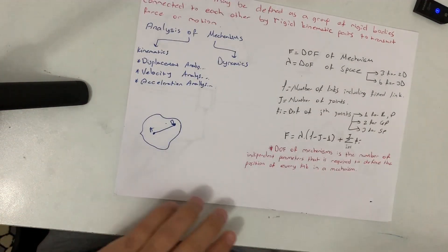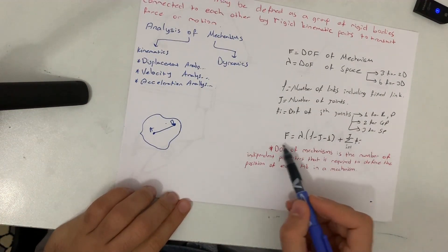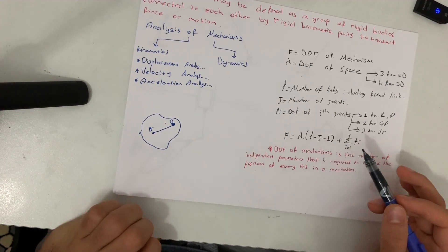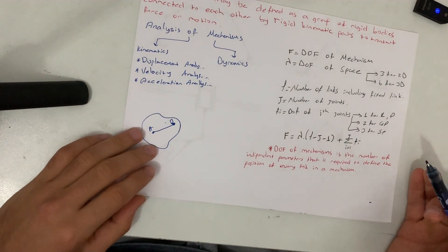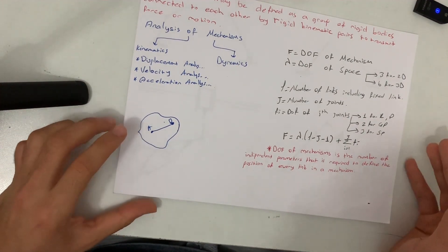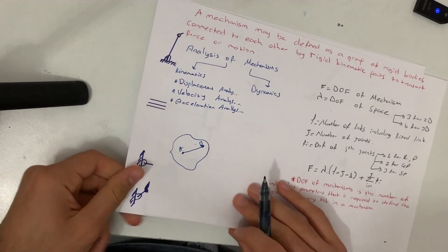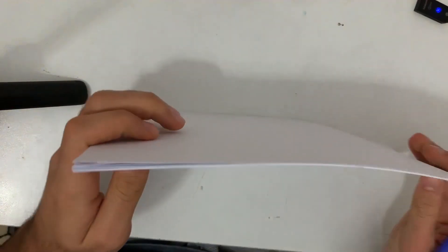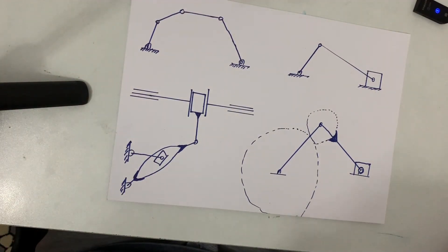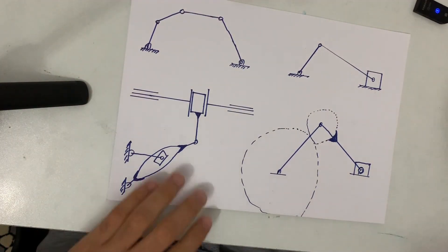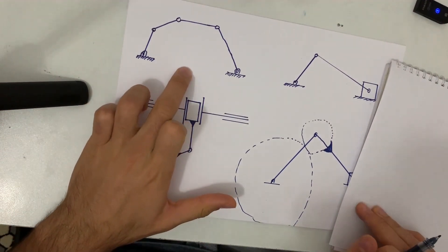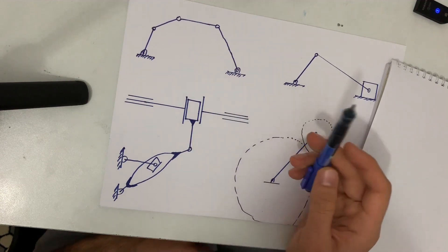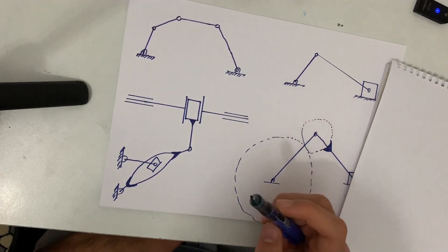So that is the formula. We will memorize it and I will write it repeatedly in the next video so you can memorize it easily with the examples. In this video I also want to show you some mechanism examples and their names. This is the classical five-bar mechanism — it has five links, so we call it the five-bar mechanism.